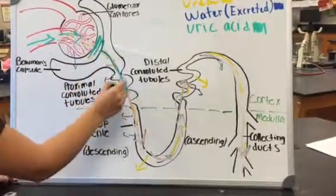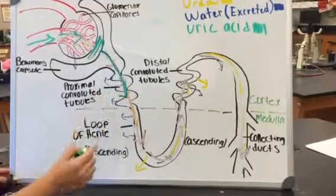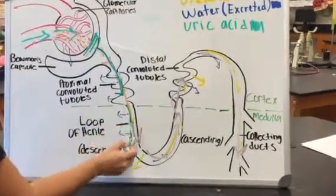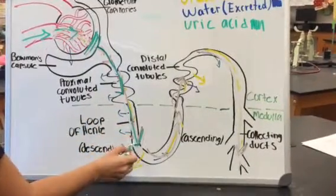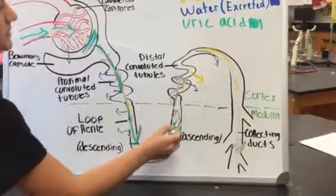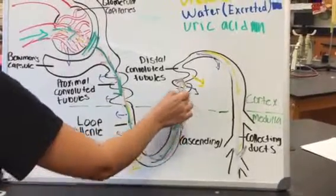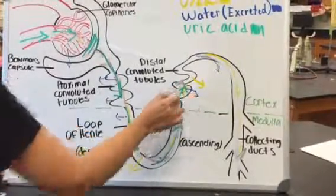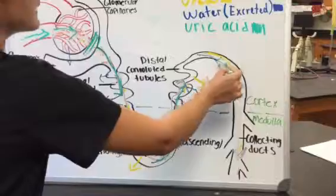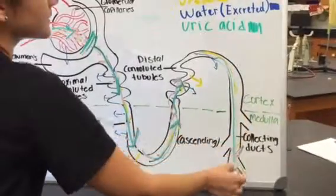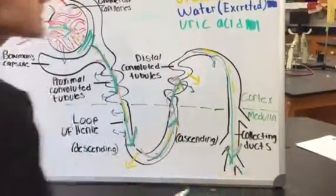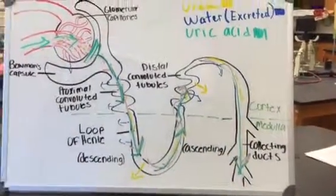It will go down the proximal convoluted tubules, down the descending loop of Henle, then up the ascending loop of Henle, into the distal convoluted tubules, and then it will go down the collecting ducts, into the pelvis, and then it will be excreted.